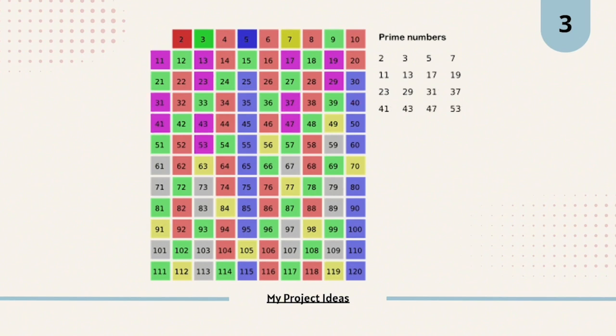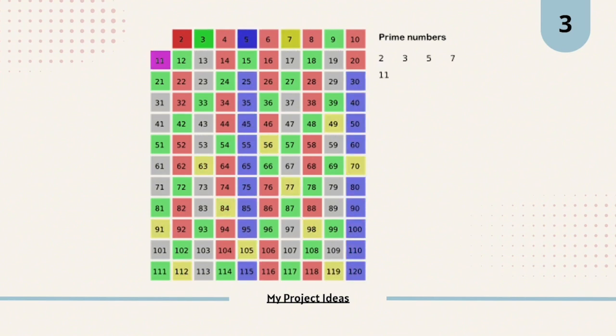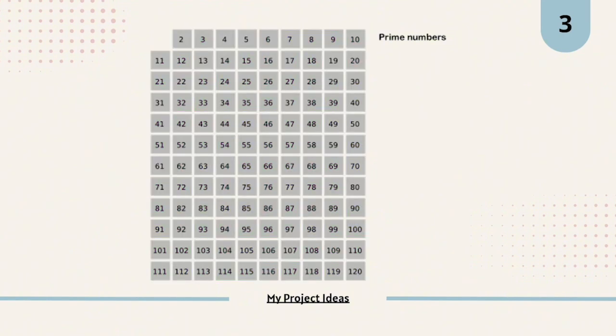Then the numbers which are left, those numbers are written. You can see subsequently the numbers are being written on the right hand side up to the number 120. Just have a look at it again. First all the multiples of 2 are marked. The prime number list is updated to 2. Then all the multiples of 3 are marked. Then it's updated to 3. Then 5. Then multiples of 7 are marked. Then all the numbers that were left were updated in the list of prime numbers. So I think this visualization was quite clear to you.